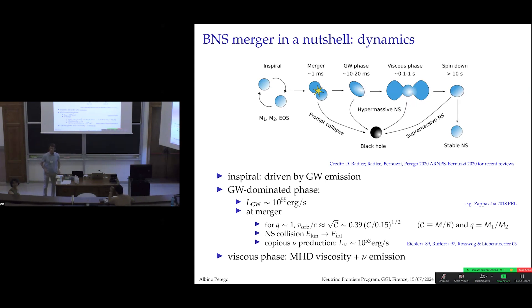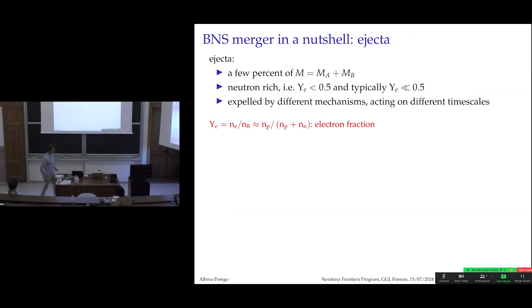The difference between the luminosity in gravitational waves and in neutrinos is somewhat related to diffusion time — this is a pretty robust result. Now, this is more or less what happens to the bulk of the matter. Luckily for the rest of the universe, there is a tiny fraction of matter that actually leaves the system. This is what we call the ejecta.